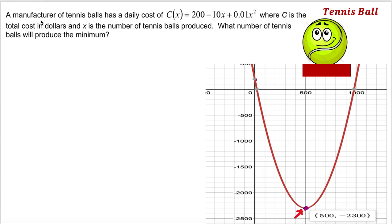If we want to find this problem analytically, of course we have to use the axis of symmetry formula, which is x equals negative b over 2a.